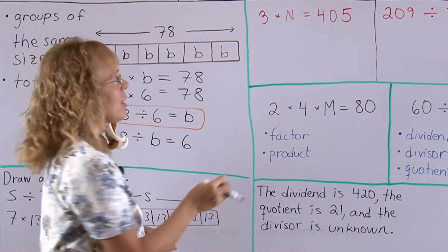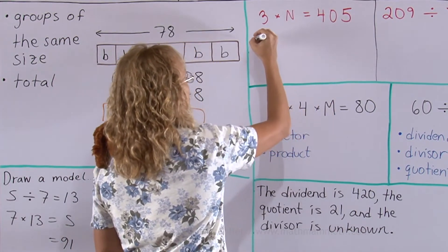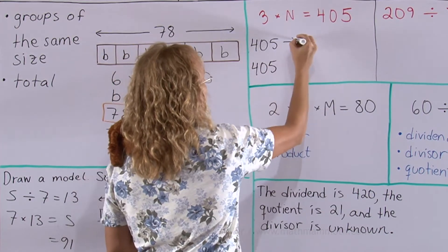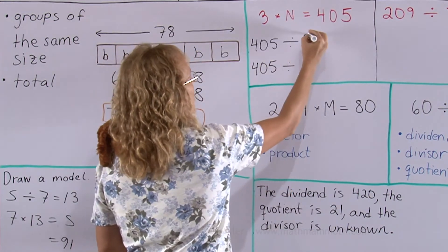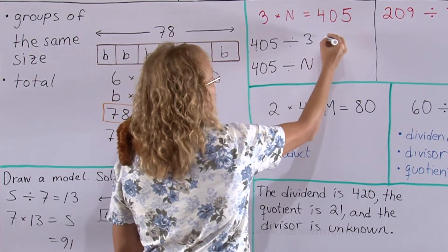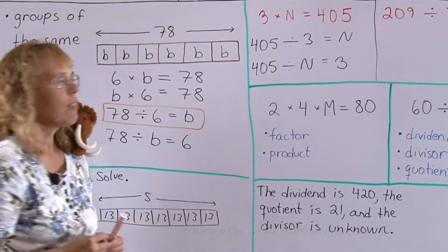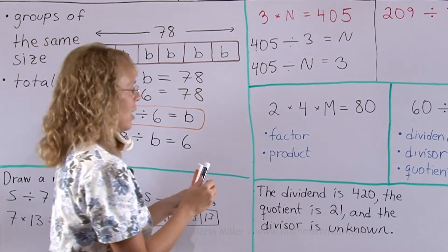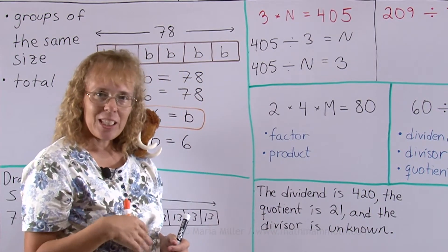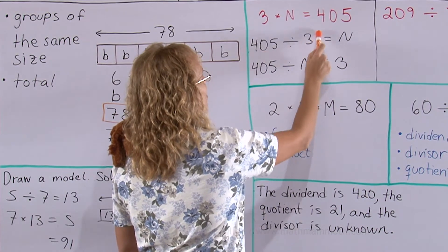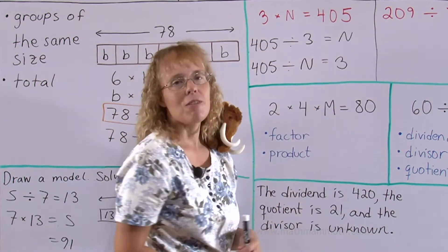They will start with the total. The multiplication here ends with the total. The divisions will start with the total. And I divide by 3 or divide by n and then I get the other. If I need to solve for n, I will look for the equation where I have n equals some calculation. So this is the one, n equals this calculation here. And then I could solve n.